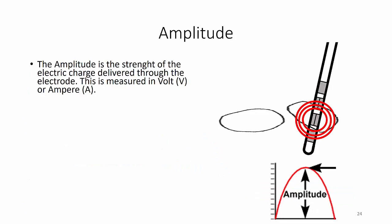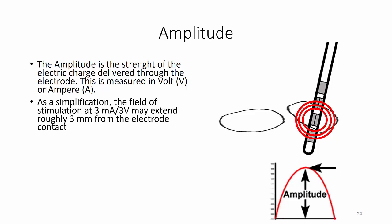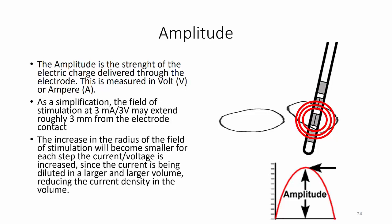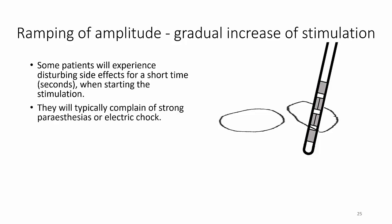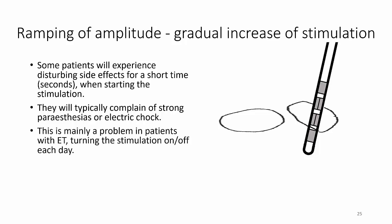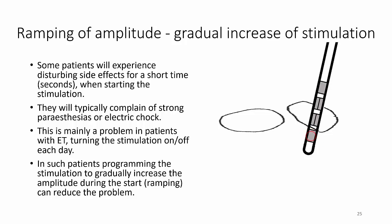The amplitude is the strength of the electric charge delivered through the electrode, measured in volts or amperes. As a simplification, the field of stimulation at 3 mA may extend roughly 3 mm away from the electrode. The increase in radius of the field of stimulation will become smaller for each step the current or voltage is increased, since the current is being diluted in a larger and larger volume. Some patients will experience disturbing side effects for a short time when starting stimulation, typically strong paresthesias or electric shock — mainly a problem in patients with essential tremor turning the stimulation on and off each day. In such patients, programming the stimulation to gradually increase the amplitude during start — that is, ramping — can reduce the problem.